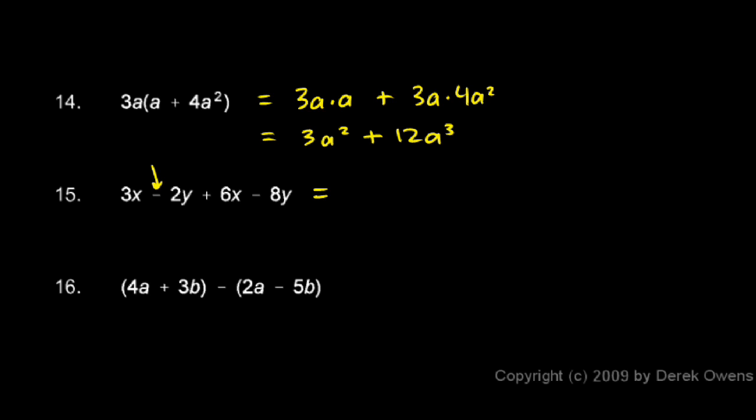Don't forget that those negative signs are part of the terms. Don't think of the four terms here as 3x, 2y, 6x, and 8y. Think of them as 3x, negative 2y, 6x, and negative 8y.